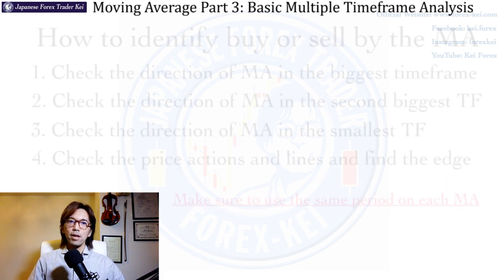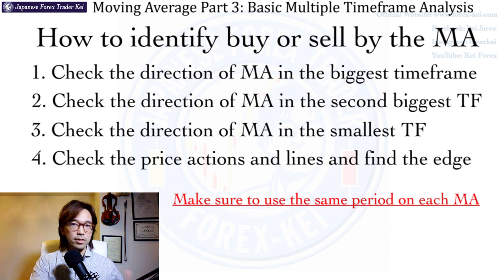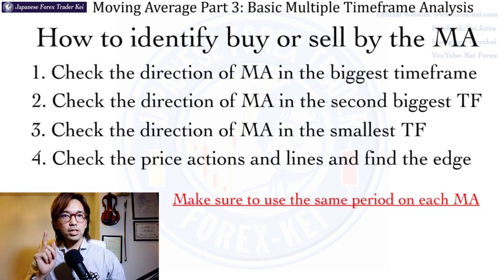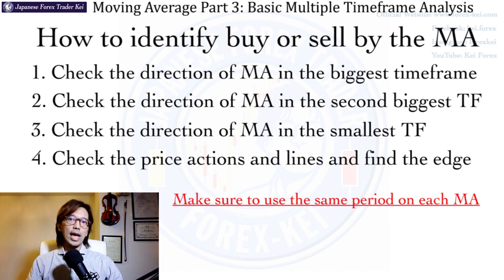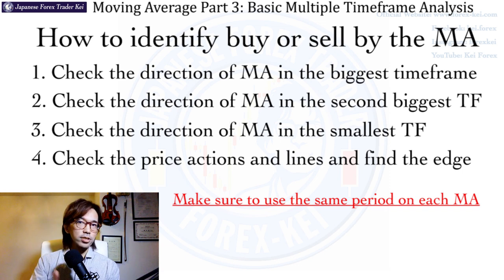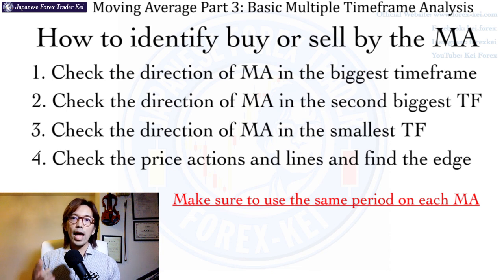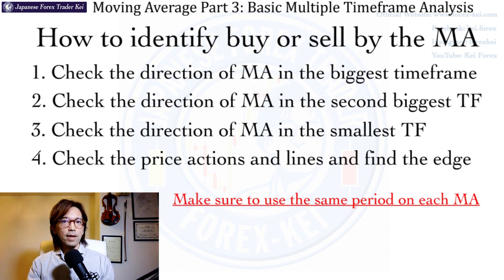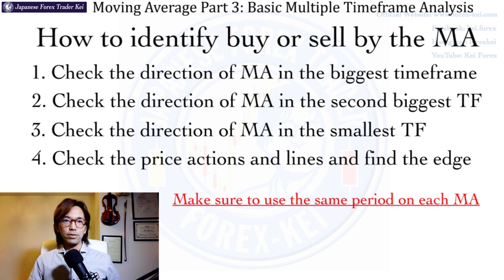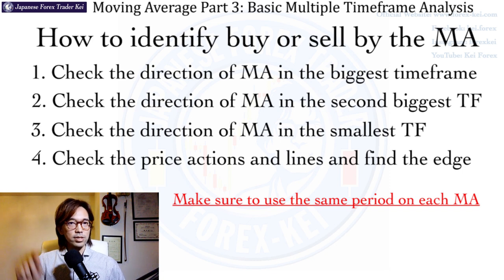Here's the procedure. First, look at the direction of the moving average in the bigger timeframe. If you want to trade based on a 5-minute chart, check the daily chart first and see which direction the moving average is pointing. If it's pointing upwards, that means it's bullish on the daily. Then look at the lower timeframe like the 1-hour chart and check the direction of the moving average there. If it's also pointing up, you know both daily and 1-hour show it's bullish. Then look at the 5-minute chart and say the MA is pointing down — what will you do?